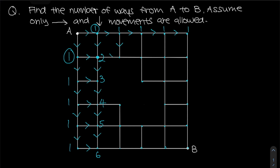We can do the same thing going to the right from A. One plus two is three, one plus three is four, one plus four is five, and one plus five is six.